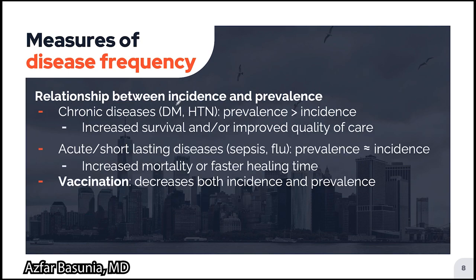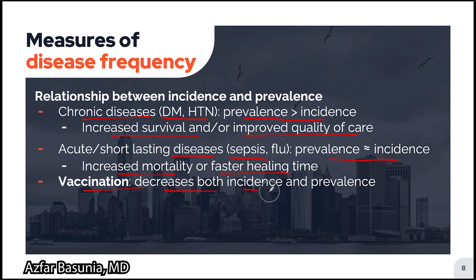Some important relationships between incidence and prevalence to keep in mind: for chronic diseases like diabetes or hypertension, the prevalence is usually greater than the incidence because of increased survival or improved quality of care. For acute or short-lasting diseases, most likely infectious diseases like sepsis or flu, the prevalence is almost equivalent to the incidence, because of either increased mortality rates such as from sepsis or faster healing time such as with the flu. Vaccination decreases both the incidence and the prevalence of the disease.